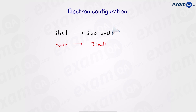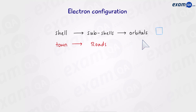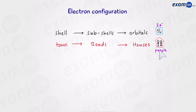Subshells are broken down into orbitals, just like roads are comprised of houses. People are found inside houses just like electrons are found inside orbitals. Orbitals are usually represented by a square and two lines represent electrons. One orbital can hold up to two electrons, and when you draw them you have to make sure that you're pointing them in opposite directions. This is because electrons are negative and repel each other.